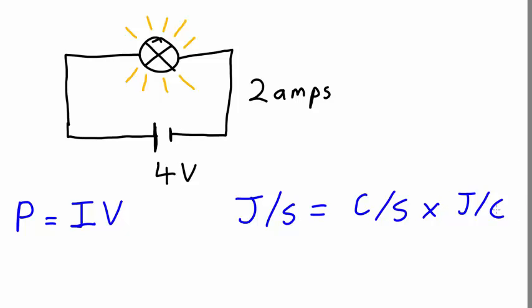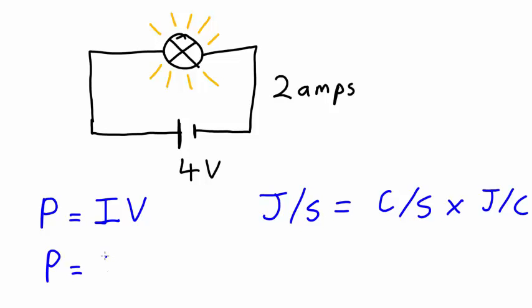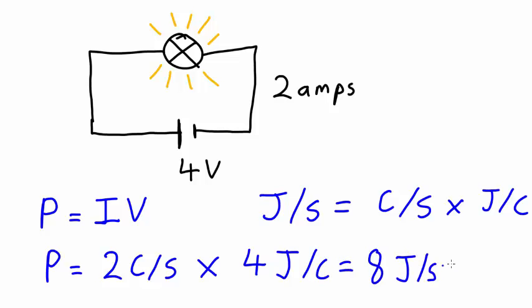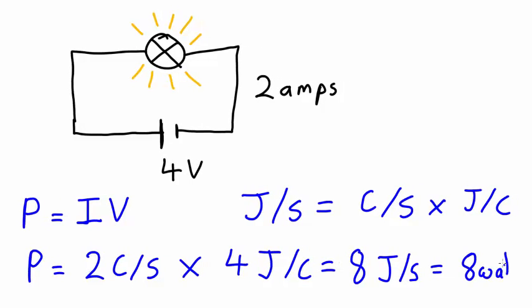In our circuit, if we wanted to find the power, we could use the formula and we would get P equals IV, which equals 2 coulombs per second times 4 joules per coulomb, which equals 8 joules per second, which equals 8 watts.